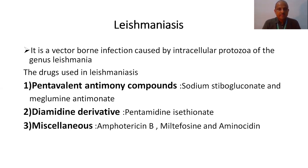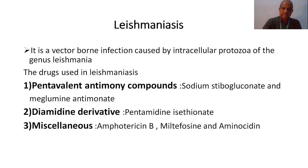The main drugs used in leishmaniasis are the pentavalent antimony compounds. These can be asked in short notes. For leishmaniasis drugs, you should write: pentavalent antimony compounds, diamidine derivatives, and miscellaneous. The miscellaneous drugs are the antifungal amphotericin B, miltefosine, and aminosidine. These are the drugs used in leishmaniasis — these are short note topics.